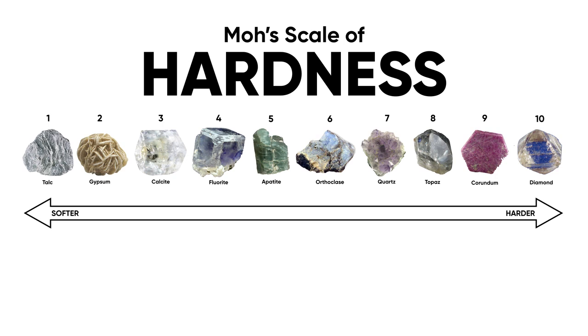fluorite, getting harder — apatite, orthoclase, harder still — quartz, topaz, corundum, and then eventually diamond, which has a hardness of 10. Diamond is the hardest mineral known to man.